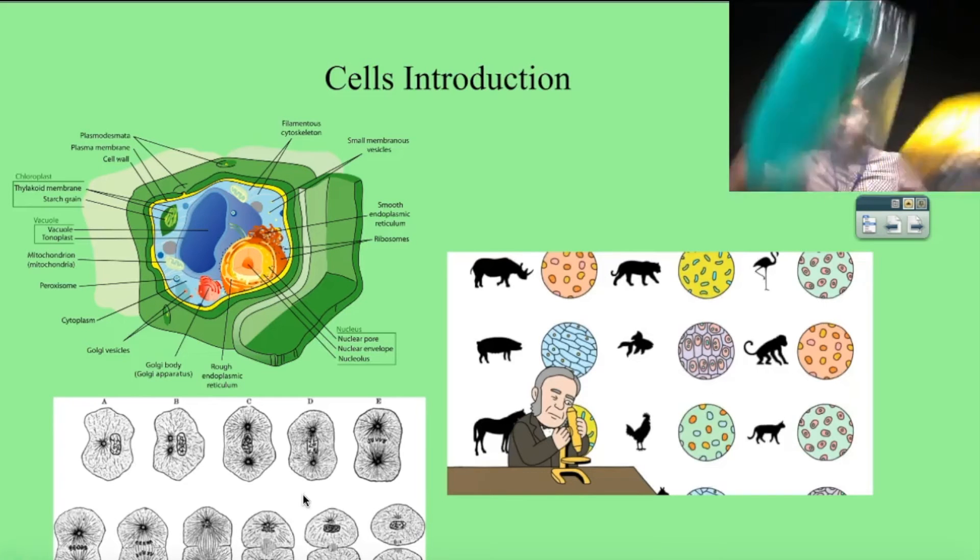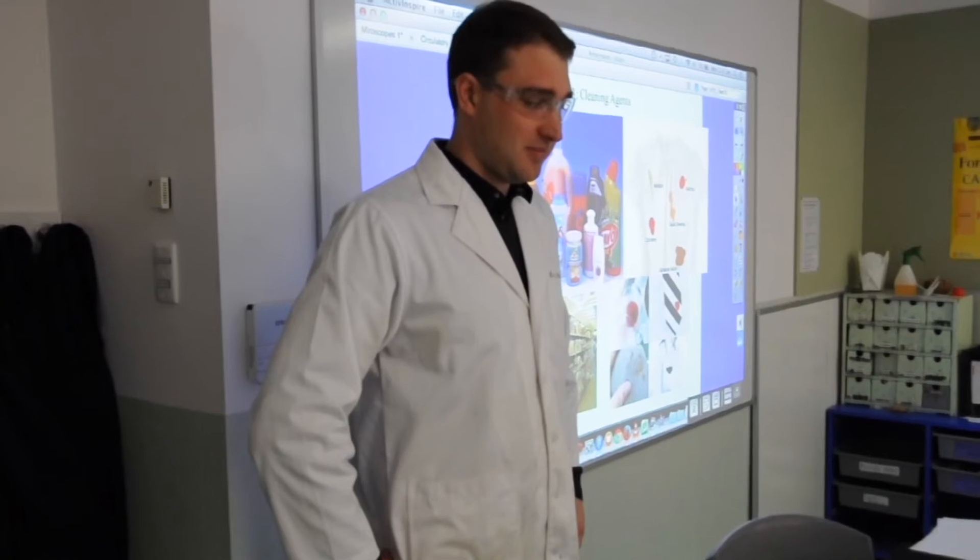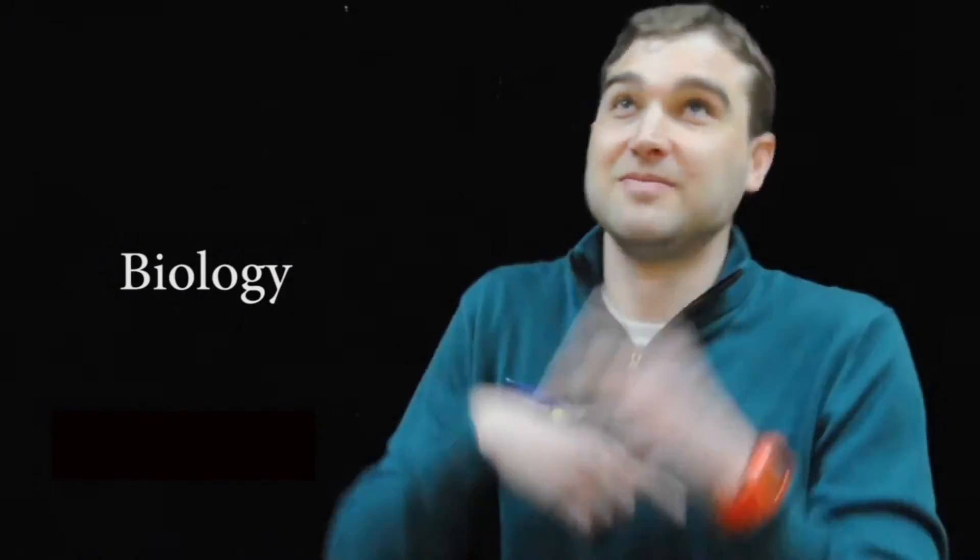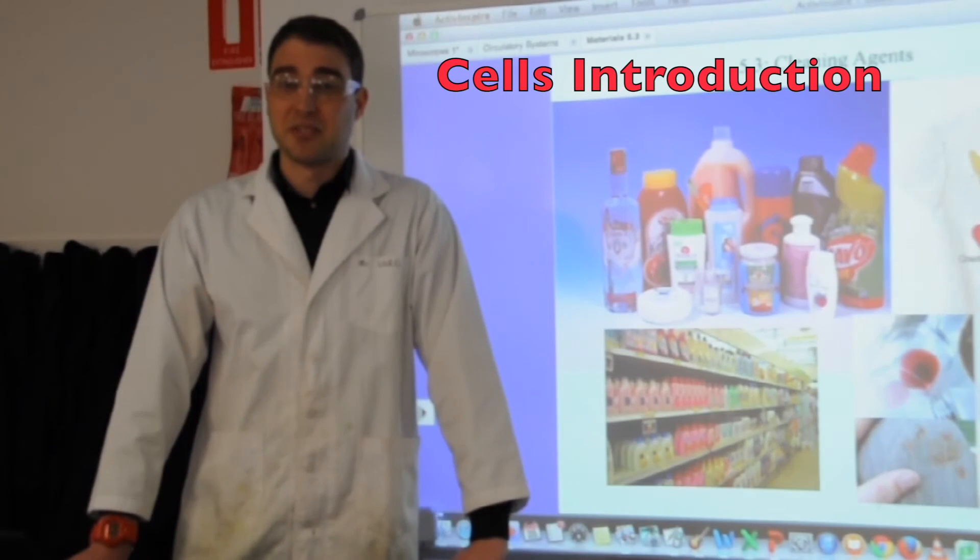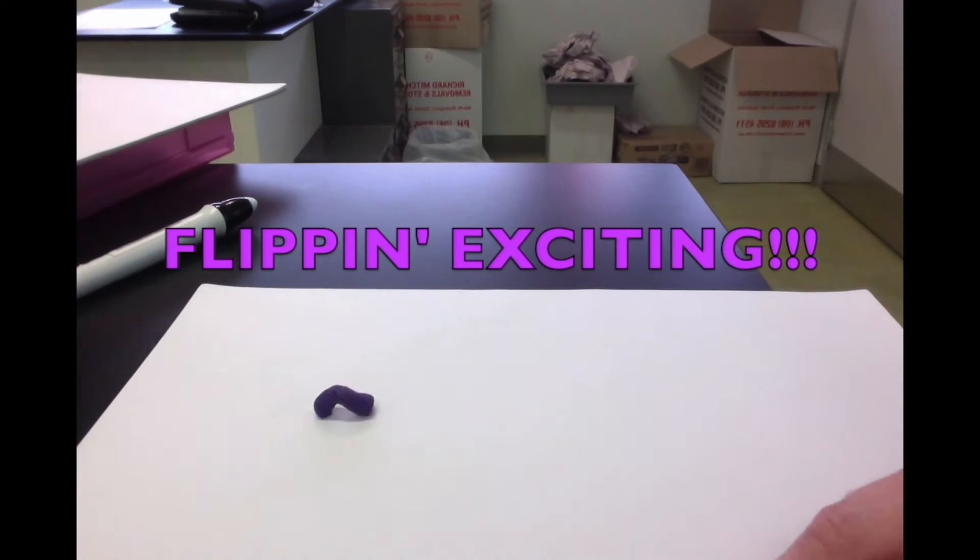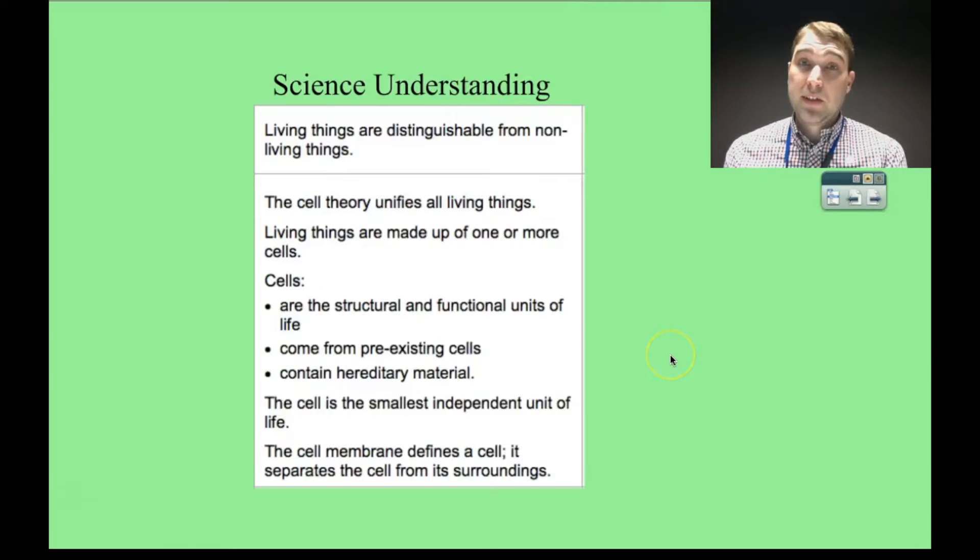Today on Flipping Science, we're going to talk about cells. In today's video, we're going to look at these science understandings. We're going to look at how living things are distinguishable from non-living things. We're going to talk about cell theory and we're going to talk about the cell membrane briefly.